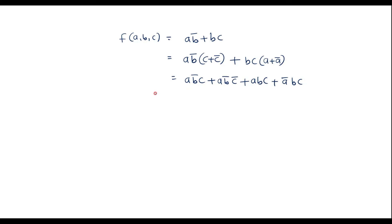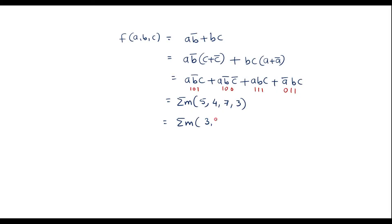In minterm expression I can represent it using summation m. The term a·b'·c is 1,0,1 which is minterm 5. The term a·b'·c' is 1,0,0 which is minterm 4. The term a·b·c is 1,1,1 which is minterm 7. The term a'·b·c is 0,1,1 which is minterm 3. So I can write it in proper form as Σm(3, 4, 5, 7). This is the standard SOP form.